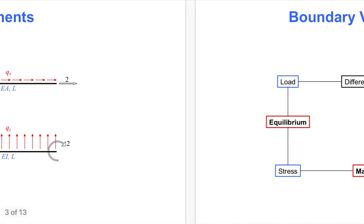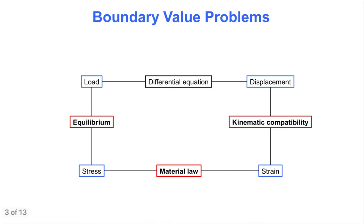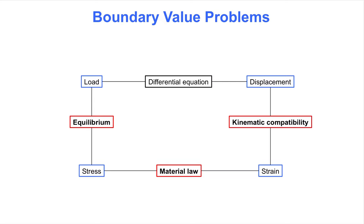The next slide gives a generic overview of the ingredients of any boundary value problem in solid mechanics. Equilibrium and sometimes section integration is on the left-hand side, kinematic compatibility is on the right-hand side, and material law links the two sides at the bottom. If we combine all those ingredients, then we get the differential equation. The finite element method is an approach for solving such boundary value problems, and we will use this type of figure for truss and beam elements as a starting point for the derivations on the subsequent slides.